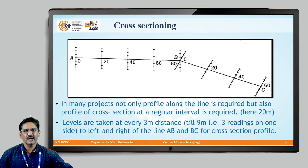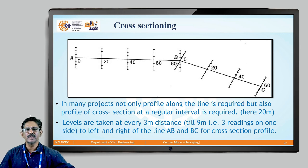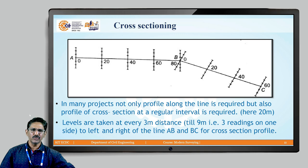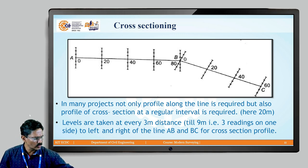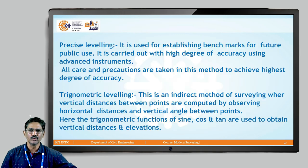Cross section leveling, as the name indicates, is done at right angles to the profile leveling. If A, B, C is the route alignment, then at intervals of 0, 20, 40, 60, 80 meters, cross section levelings are taken at 5, 10, and 15 meters to both the left and right of the center line. This provides more information about the lateral cross-section of the route or alignment.